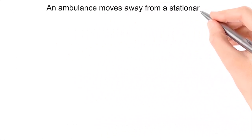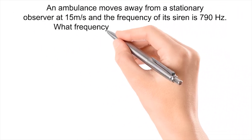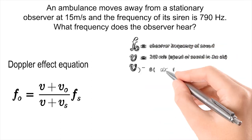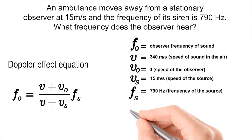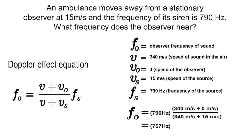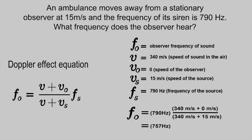Let's consider this. An ambulance moves away from a stationary observer at 15 meters per second, and the frequency of its siren is 790 hertz. What frequency does the observer hear? The frequency of the sound the observer hears is 757 hertz. It has a smaller volume compared to the frequency of the siren, since the ambulance is moving away from the observer.